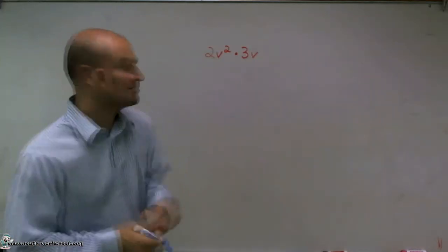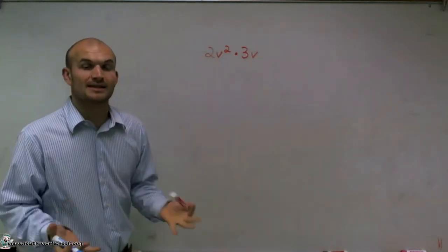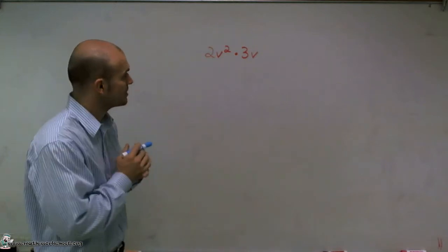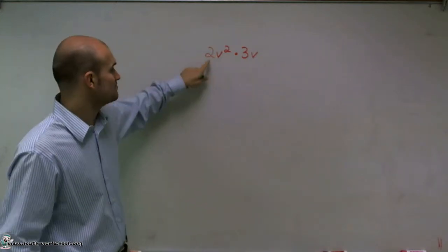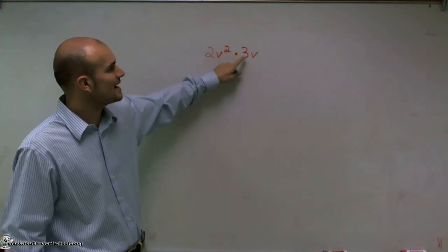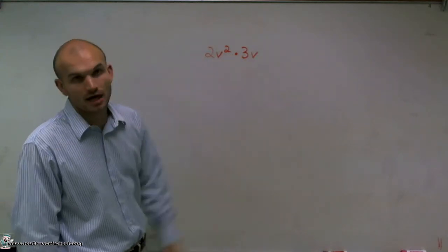Welcome. What I want to do is show you how to simplify this expression by leaving my answer with positive exponents. So what this expression has asked me to do is multiply 2 times v squared times 3, 3v.